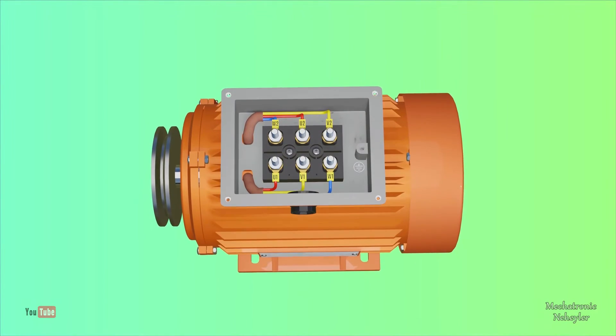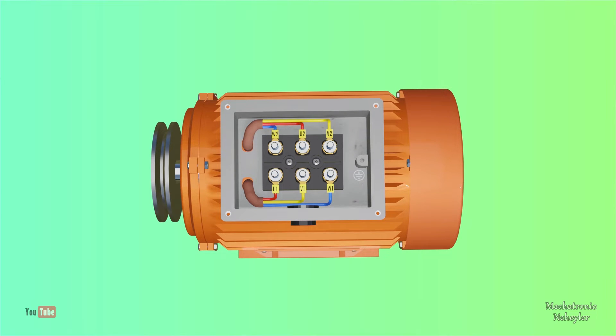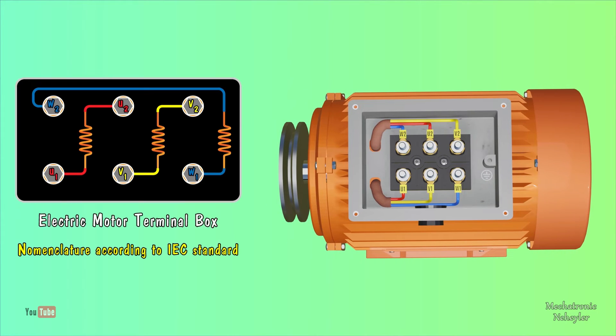Every electric motor has a terminal box, where the terminals of the coils that compose it are located to be able to make the different connections that are required.